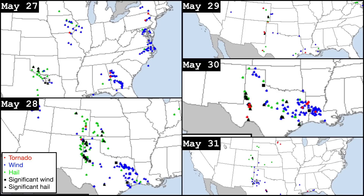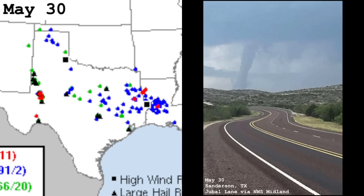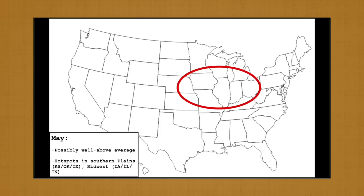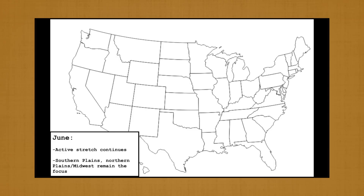Things would quiet down synoptically for the remainder of the month, but the tornadoes still kept coming. Several southern high plains mesoscale days rounded out May, the most notable of which provided strong tornadoes near Midland and Sanderson, Texas on the 30th. Overall, our May forecast fared well, with a well above average tornado count occurring across a very broad area, including places like the southern plains, the Midwest, and the Mid-South.